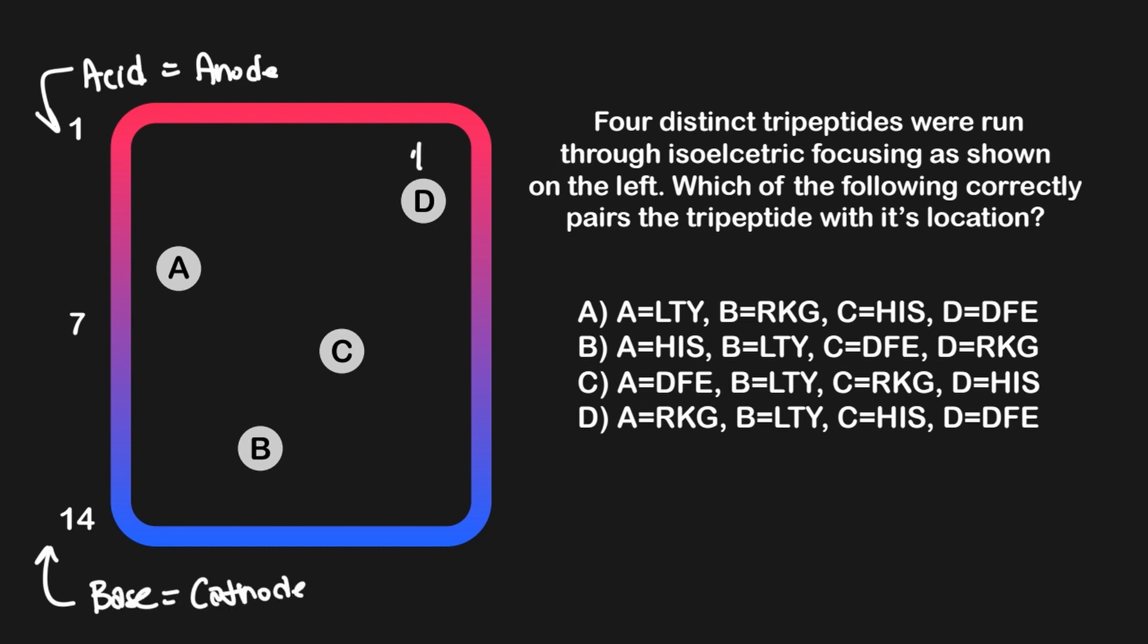This means peptide D is anionic at neutral pH since the anode attracts anions, while peptide B is cationic since the cathode attracts cations. Scanning through our answer choices, we can see that only answer choice A and D had peptide D as negatively charged or anionic, so we can eliminate both B and C since we know peptide D was originally an anion since it was found near the anode side of this gel.